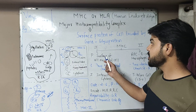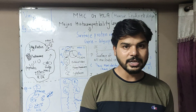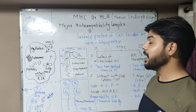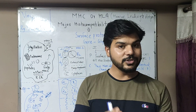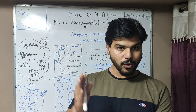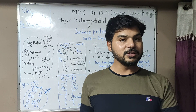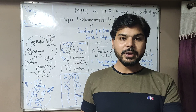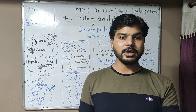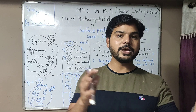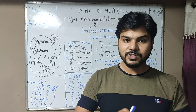The MHC complex can also be called HLA — Human Leukocyte Antigen. Each protein has a specific gene to perform its function. In rats or mice, there is the H2 complex which is the equivalent of MHC. In humans, we call the MHC gene HLA.